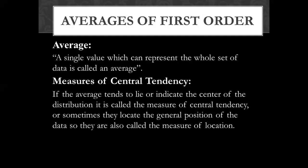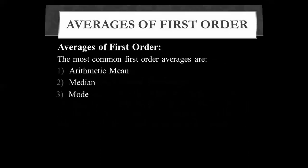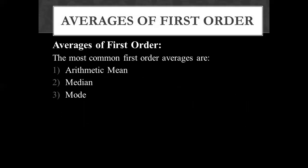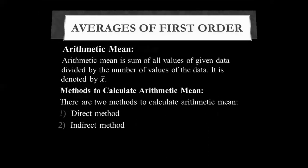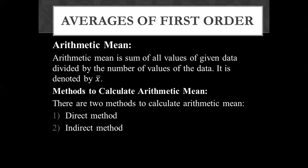We will talk about averages of first order. The arithmetic mean is the sum of all values of a given data divided by the number of values of the data. It is denoted by x-bar.